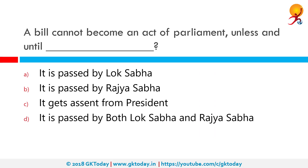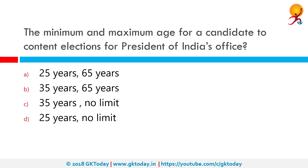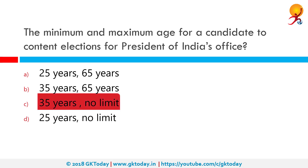A bill cannot become an act of the parliament unless it gets the assent from the President. The minimum and maximum age for a candidate to contest elections for the President of India's office: Article 58 of the constitution lays down the qualifications of a President of India. He should be a citizen of India, must have completed the age of 35 years, must be qualified to become a Lok Sabha member, and should not hold any office of profit under union or state government. So the correct answer is 35 years and there is no upper age limit.